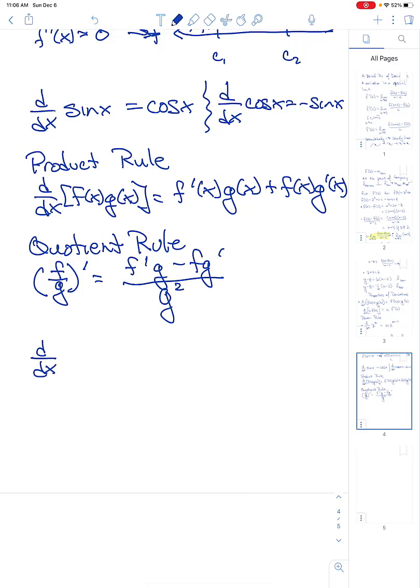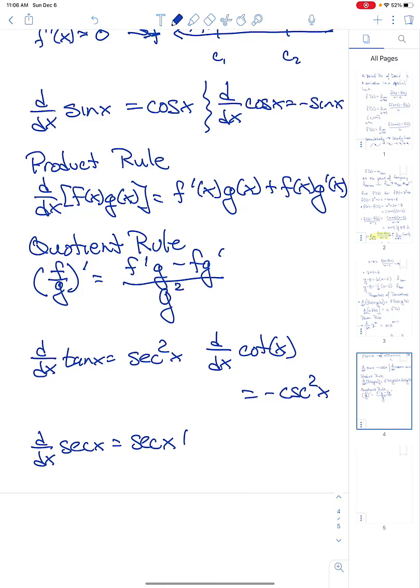So that means the derivative with respect to x of the tangent of x was the secant squared of x. The derivative with respect to x of the cotangent of x was minus cosecant squared of x. The derivative with respect to x of the secant of x was the product of the secant of the angle and the tangent of the angle. And the derivative with respect to x of the cosecant of x was negative one times the product of the cosecant of the angle and the cotangent of the angle. And that basically, ladies and gentlemen, are all of the basics of the derivative.